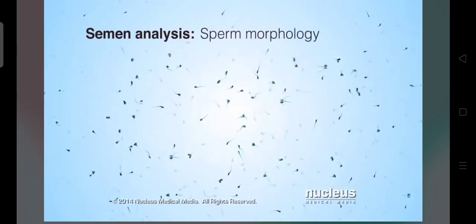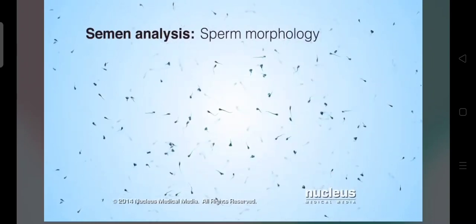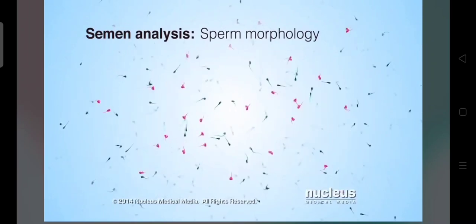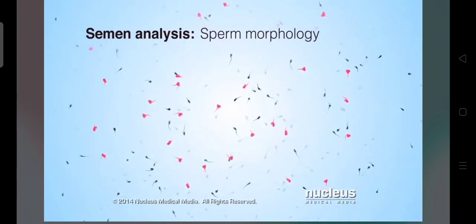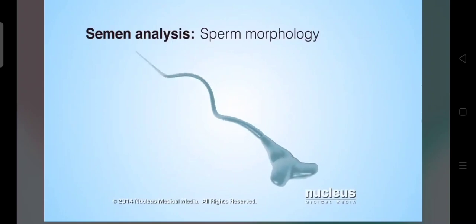Third, a morphology test will look at the shape of the sperm. Sperm with abnormal morphology may have a shape that causes poor motility, or the sperm may not be able to swim.